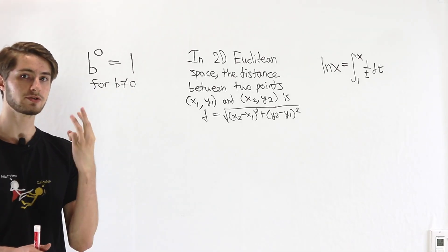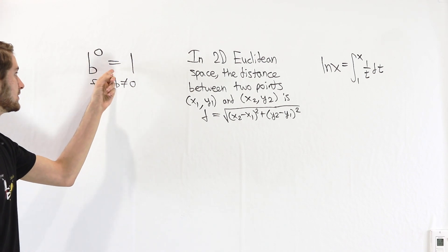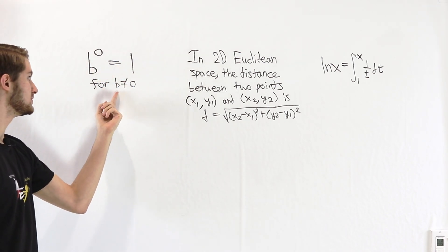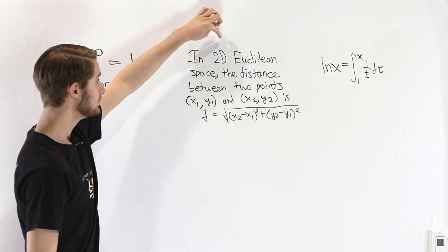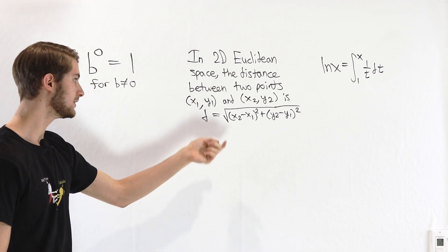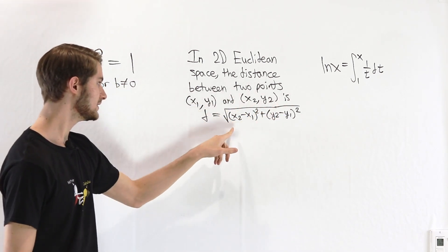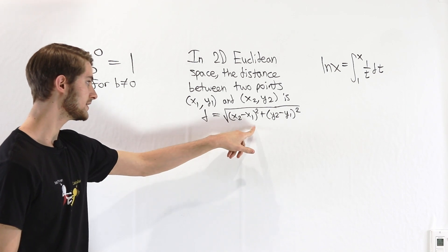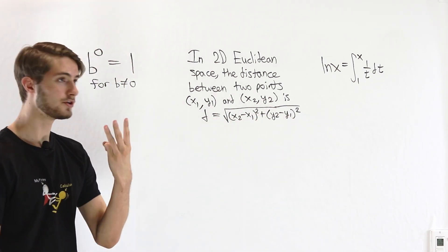So on the board here, I've written three different statements. First, b to the power of 0 equals 1 for a base b not equal to 0. Second, in 2D Euclidean space, the distance between two points (x1, y1) and (x2, y2) is d equals the square root of (x2 minus x1) squared plus (y2 minus y1) squared. And third,